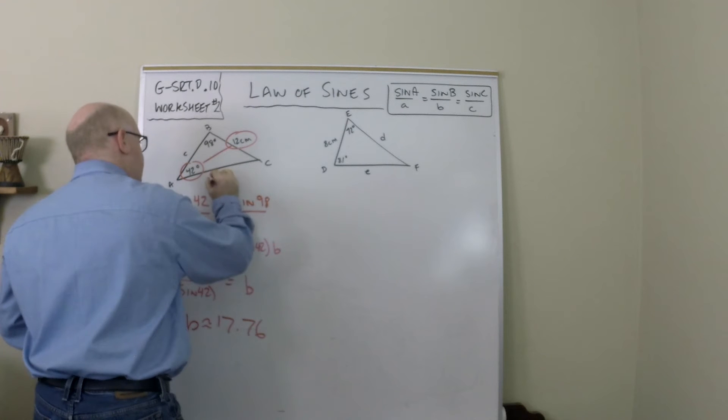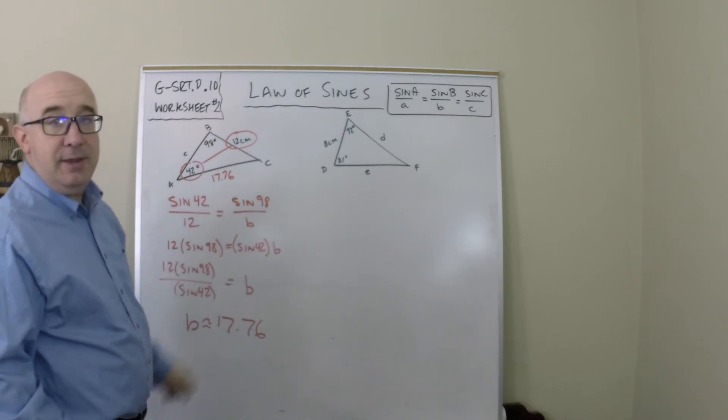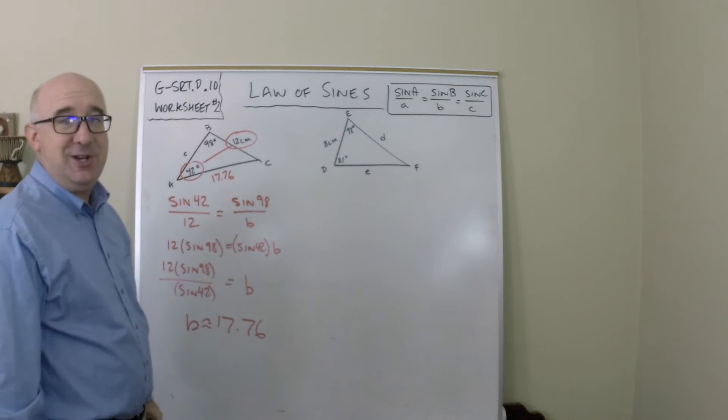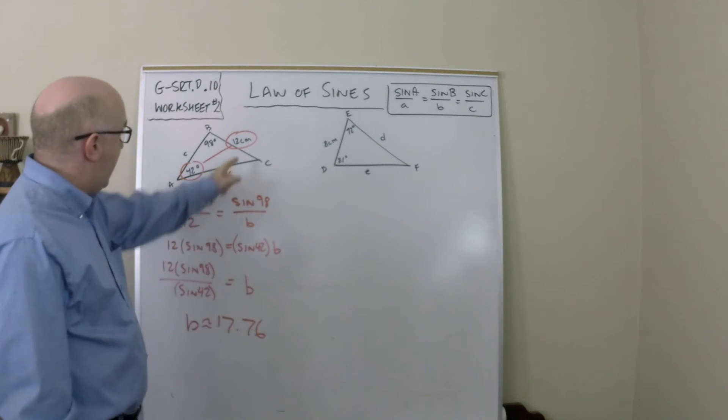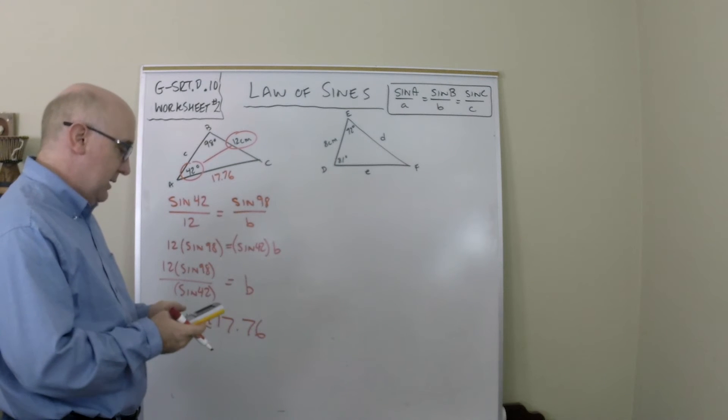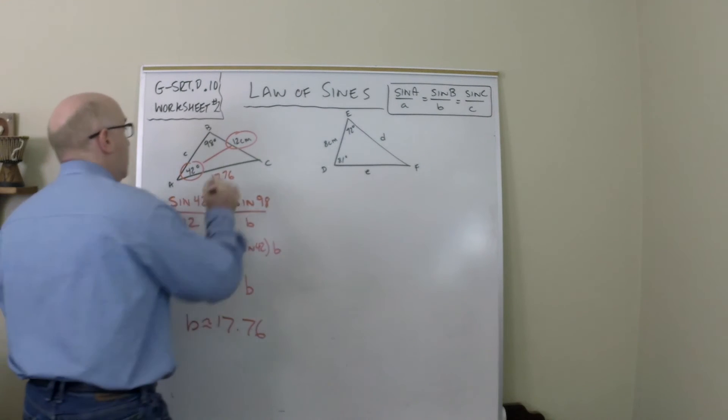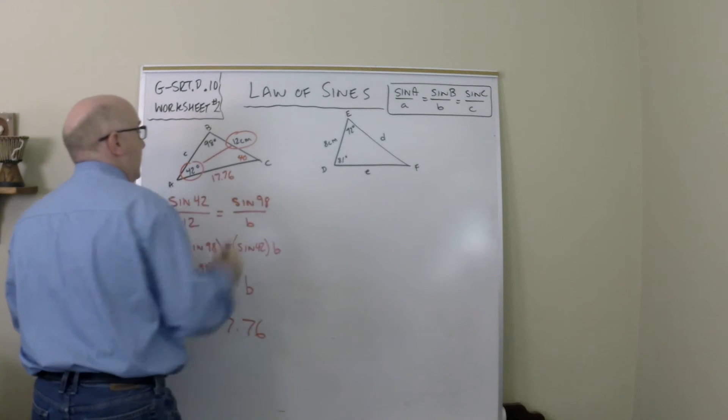And it makes sense that this would be longer. The bigger the angle, then the bigger the side. There's a relationship there. Now the last angle is not known currently, but we can find that quite easily. We can just take 180 and subtract the 98 and subtract the 42. So this is a 40 degree angle.